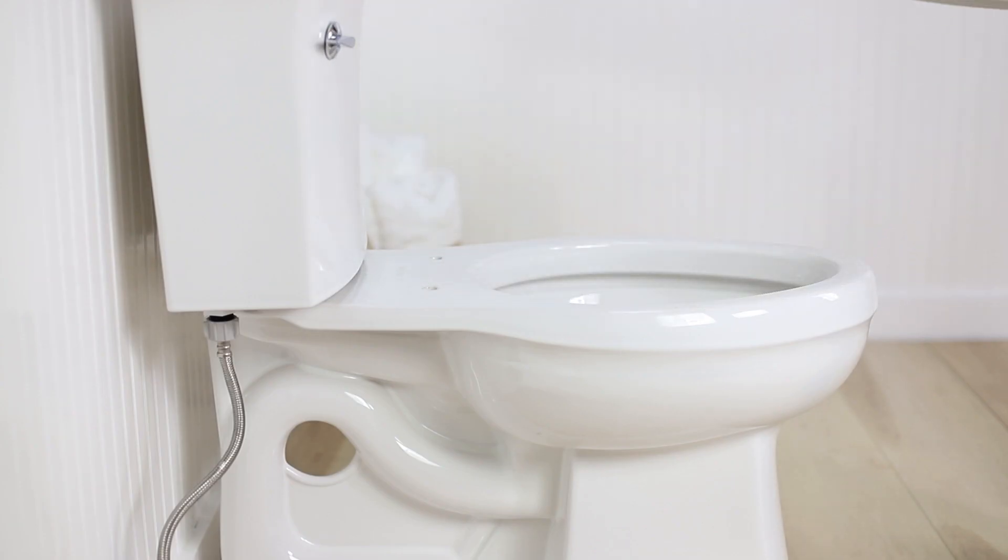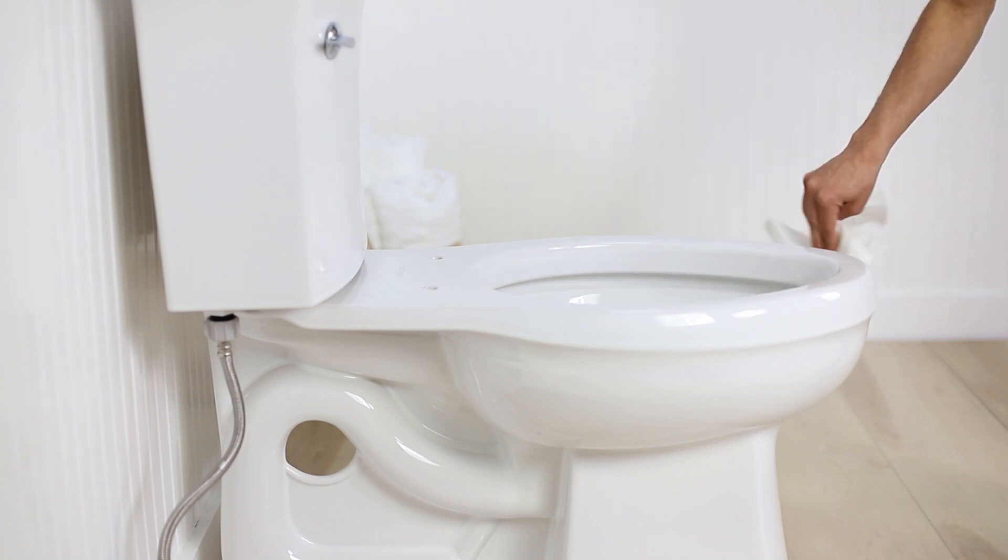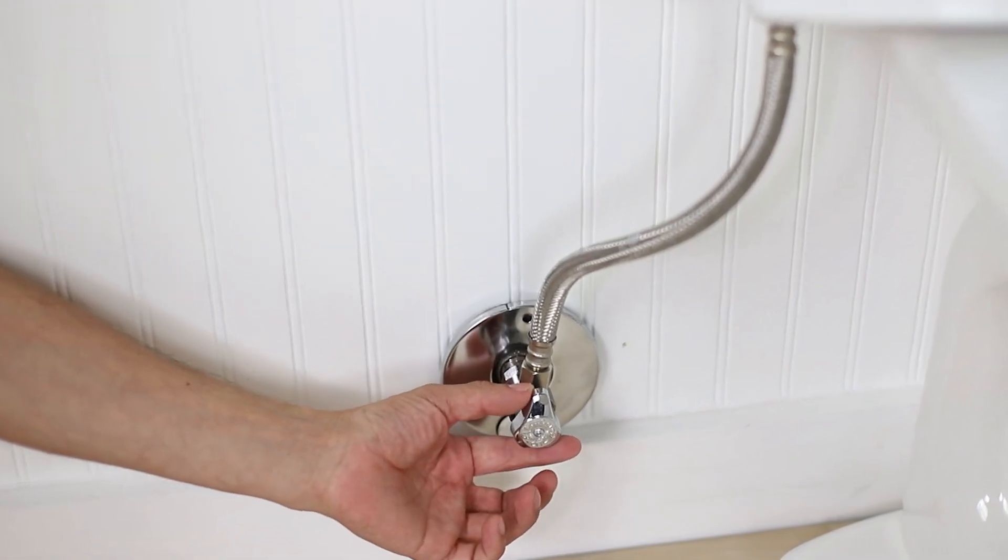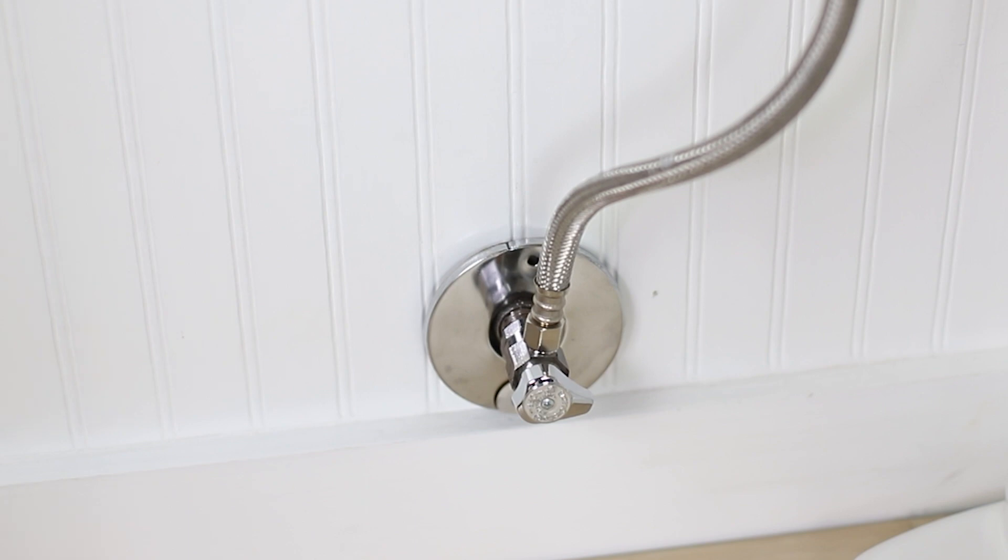First, remove your existing toilet seat and thoroughly clean your toilet. Turn off the water supply at the shutoff valve on the wall to stop the flow of water to the toilet.